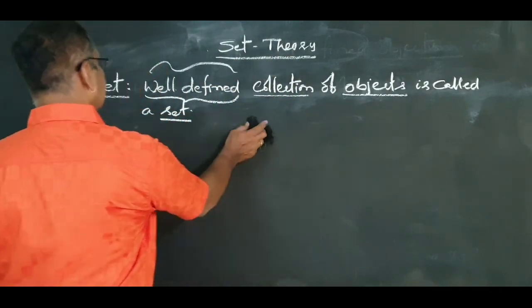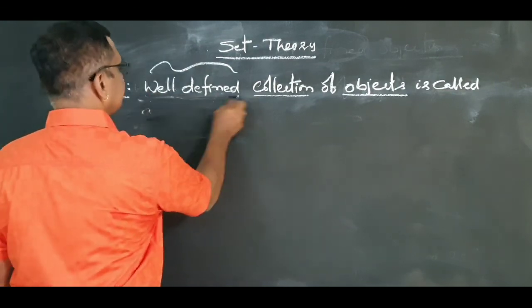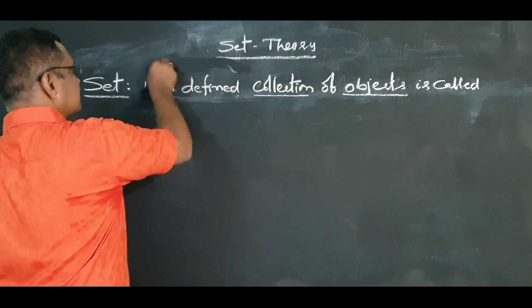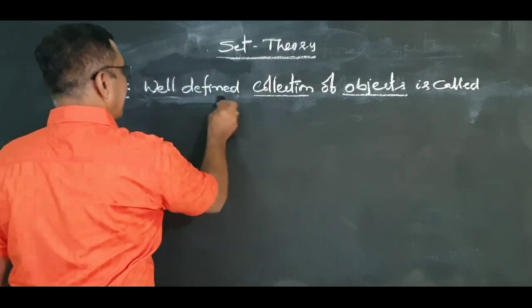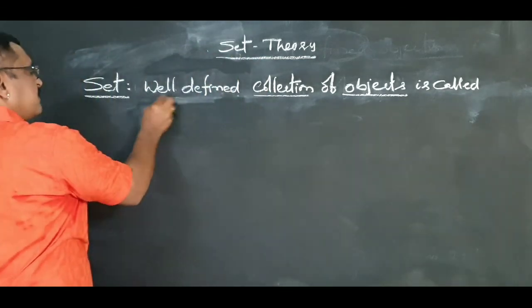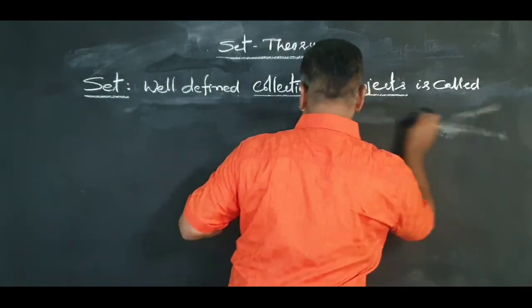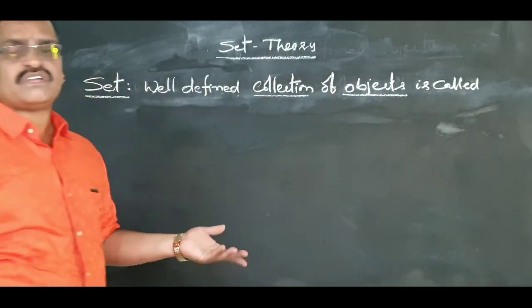So what is set? Well-defined collection of objects. That means universally acceptable collection of objects. Please note down this definition. Very simple: well-defined means universally acceptable.